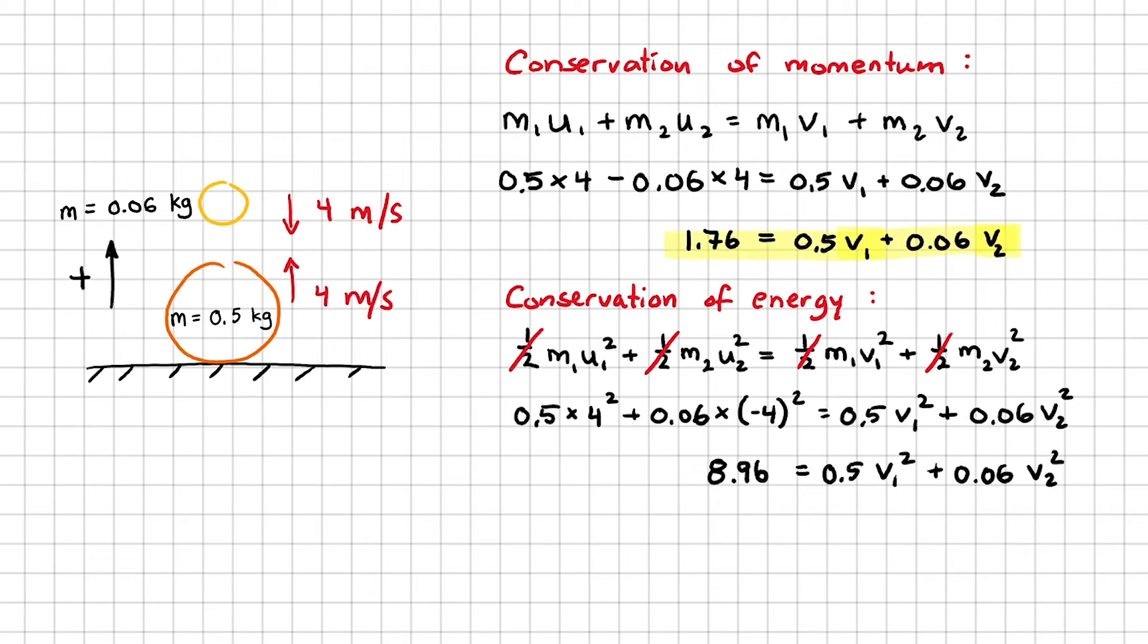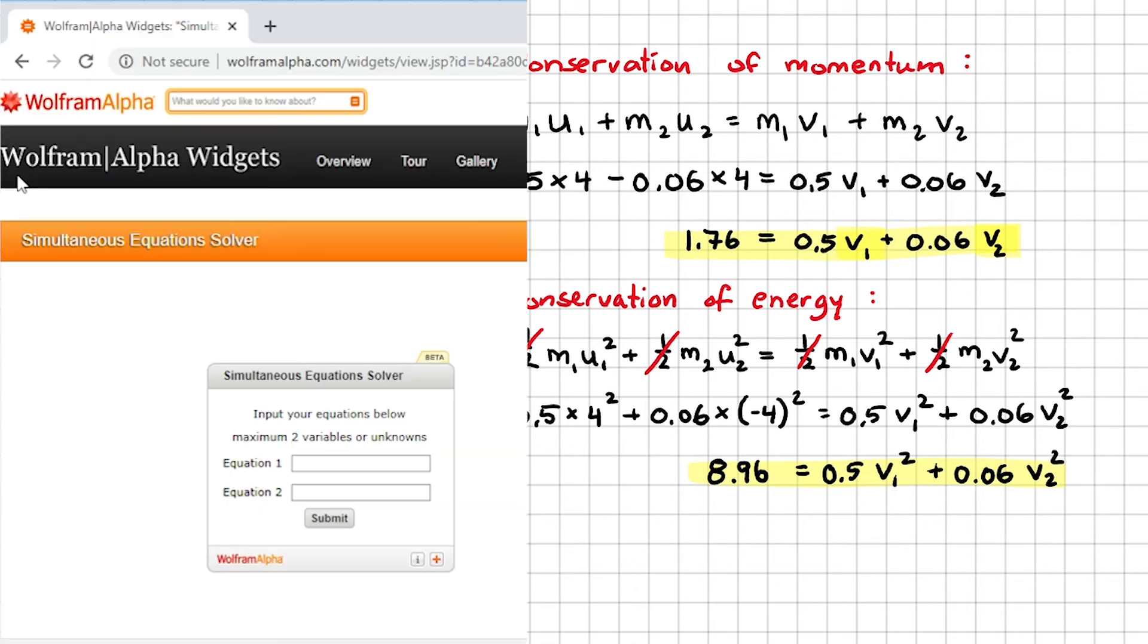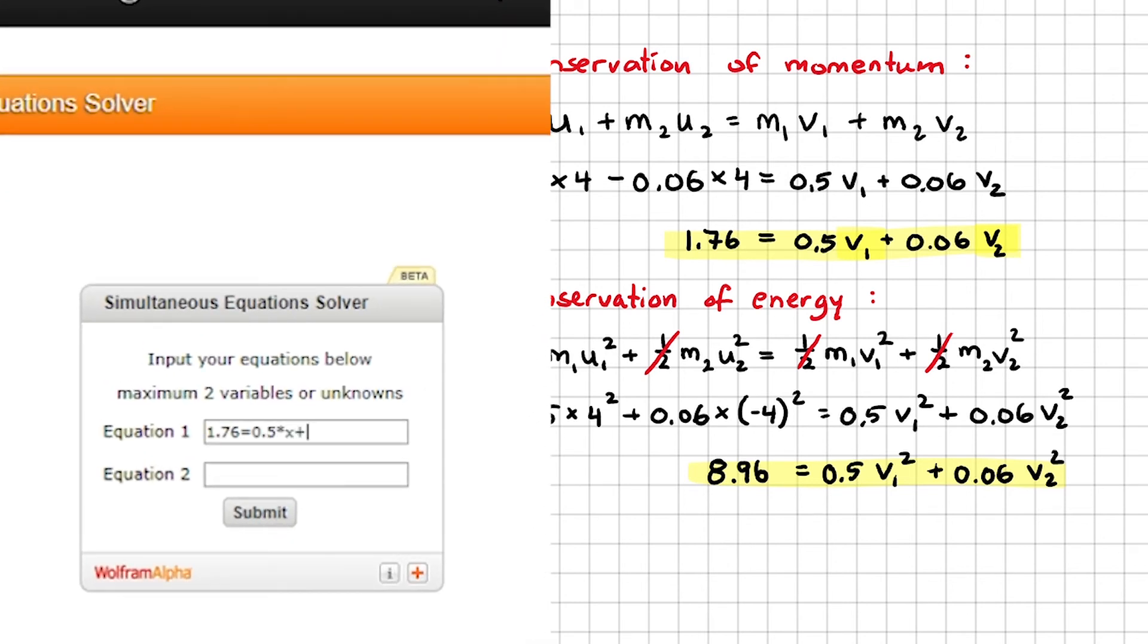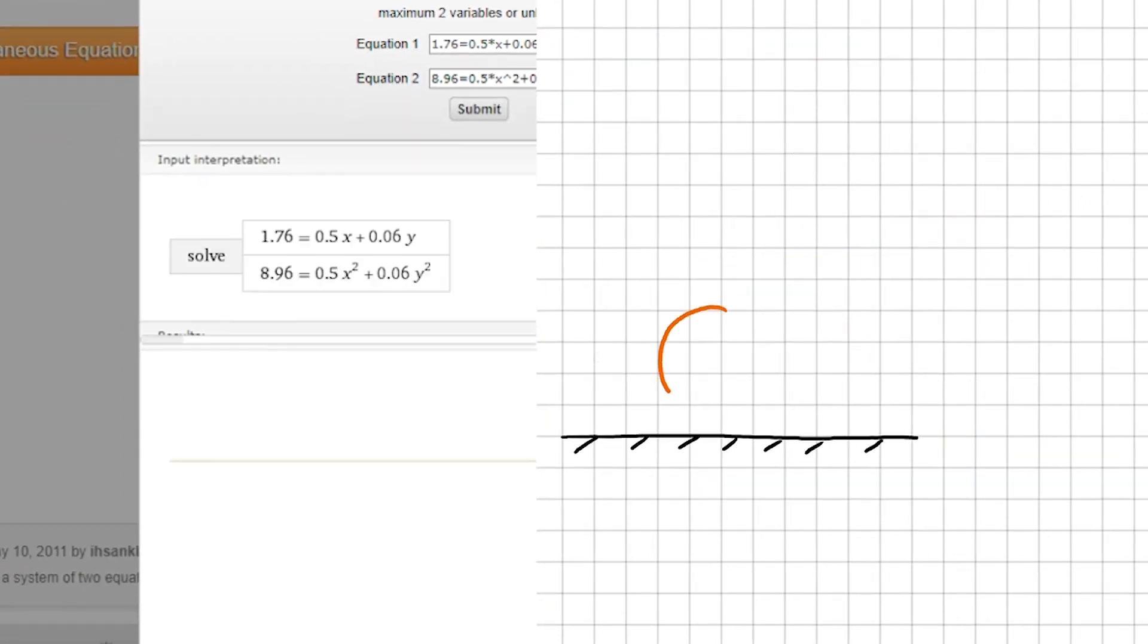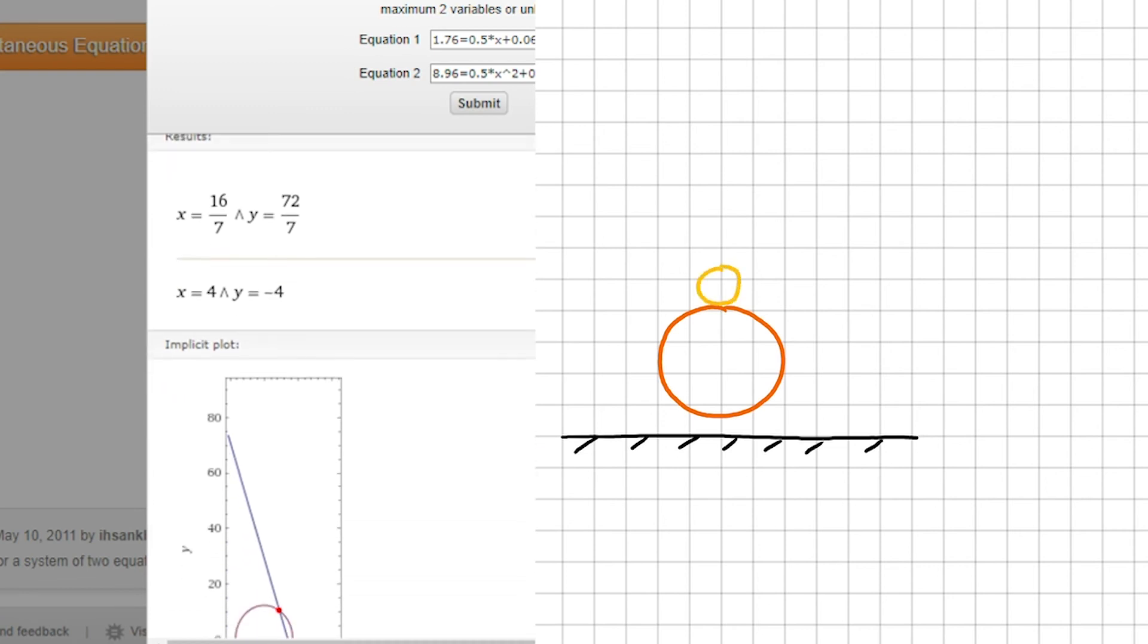Now that I have two equations, I'm going to cheat and use Wolfram Alpha to help me solve these simultaneous equations. For those of you who haven't used Wolfram before, it is a powerful online computational platform. I'll type in the two equations in these boxes, but I can't use any subscripts, so I'll just replace V1 and V2 with X and Y.